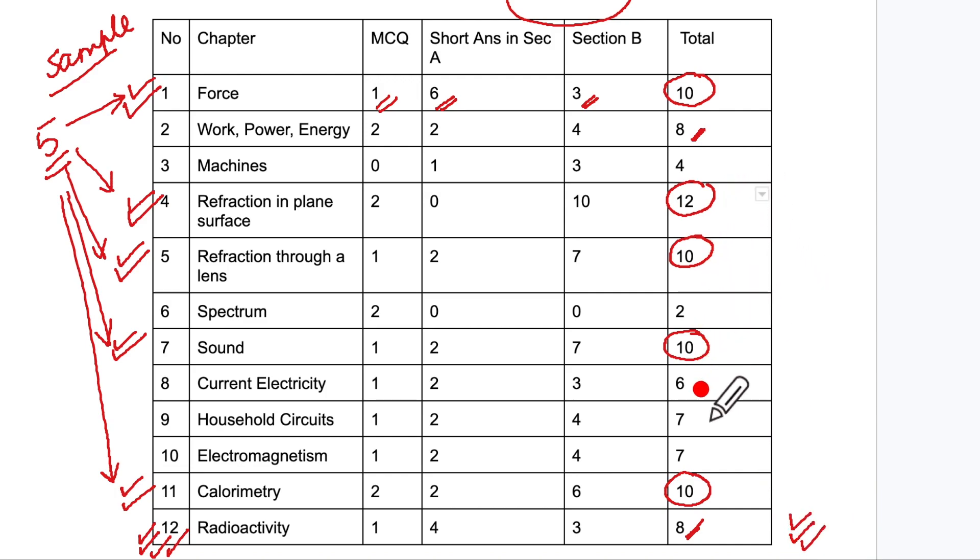Now let us look at the remaining ones: current electricity, household circuits, and electromagnetism. If you combine these two then you have 13 marks, and if you combine this electricity it is 20 marks. So can you see this is 20 marks for electricity and magnetism, and then mechanics is 10, 8, and 4, that is 22 marks.